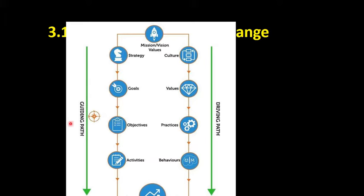So this kind of guiding path is what should be happening. This is what should be happening in order for the strategy to achieve its objectives. However, this you'll notice is called the guiding path and the driving path. Actually, where we go is determined by the culture essentially.